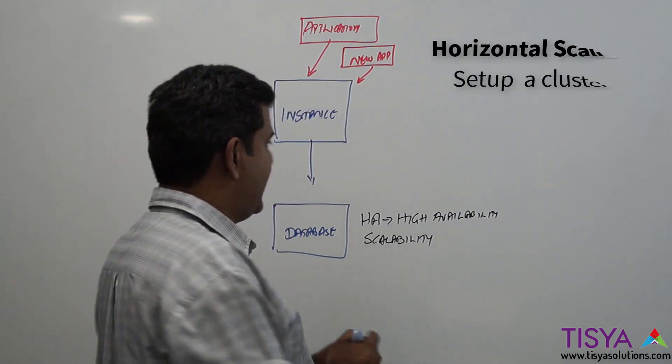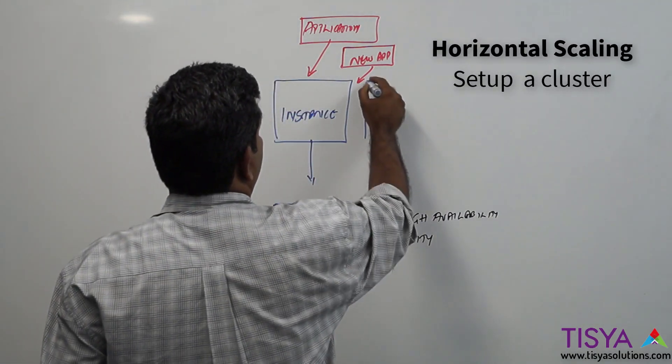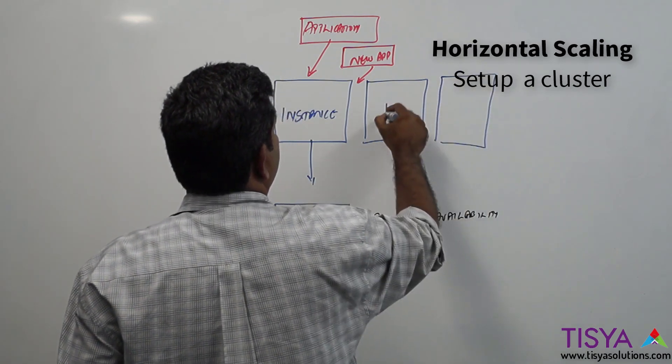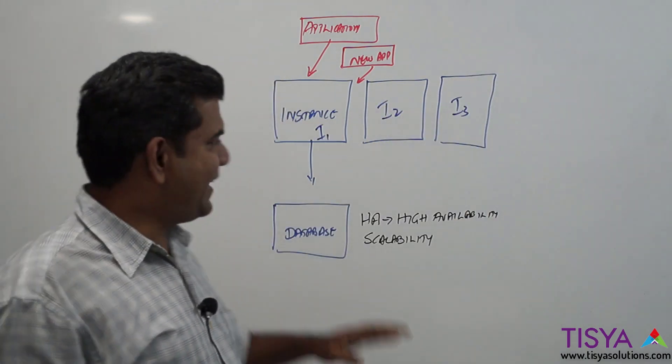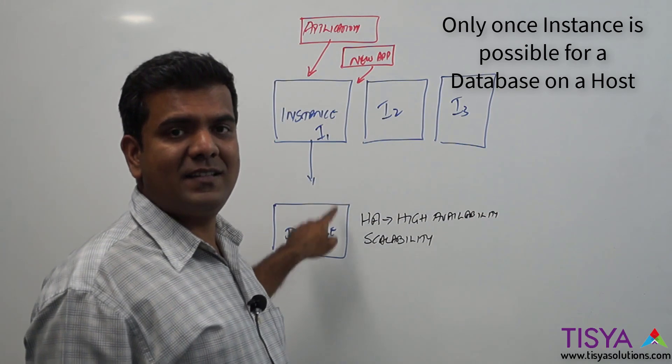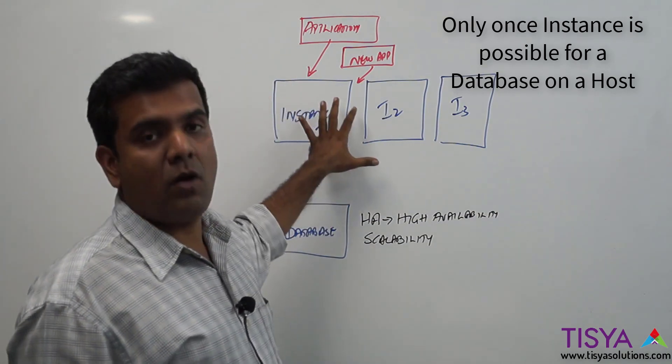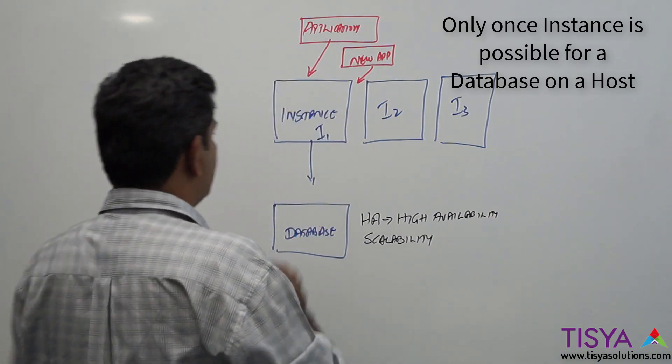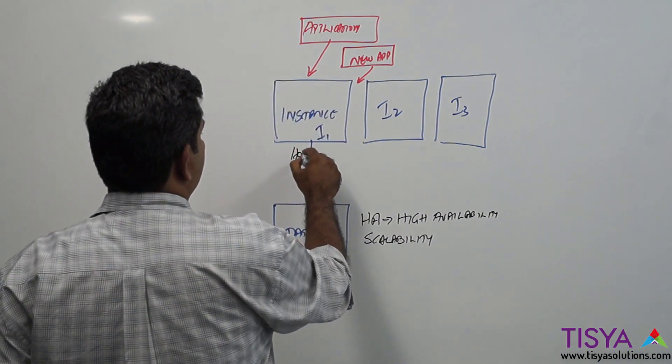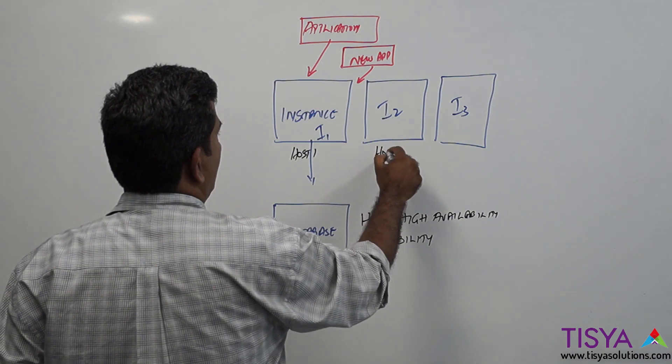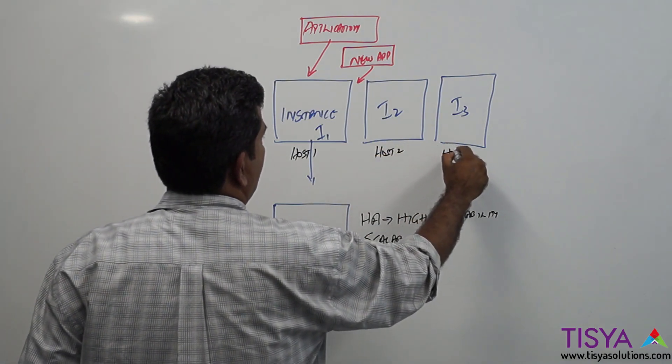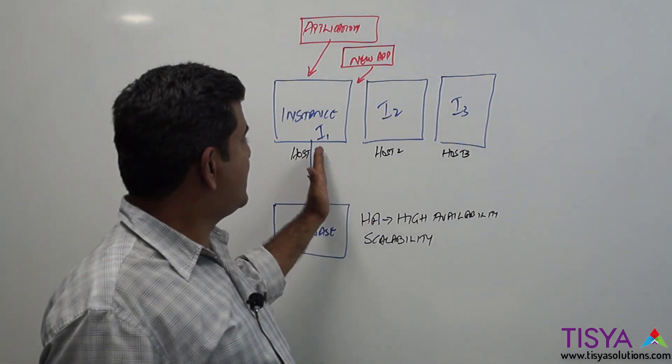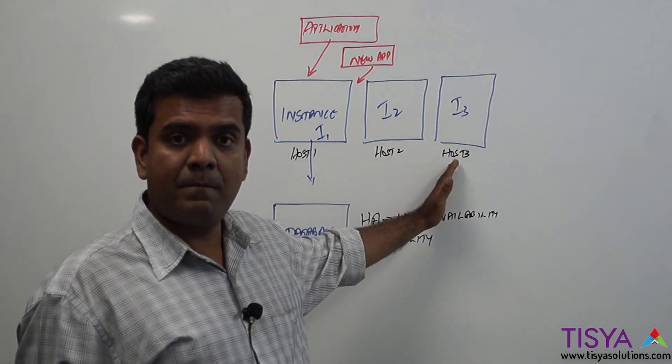Obviously, I cannot have two instances for the same database running on the same box. One instance is more than enough. So what I'm going to get here is host 1, host 2, host 3. Now I'm going to have three different servers which are represented as three different hosts, each one of them having an instance.